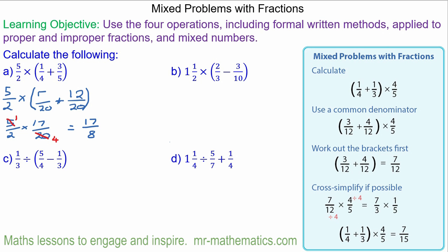Question B. Again we're going to write this subtraction with a common denominator. So this would be thirty. So that would be twenty over thirty minus nine over thirty.